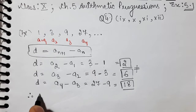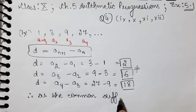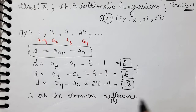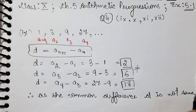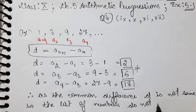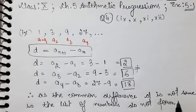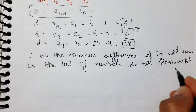Therefore, the common difference D is not the same. The list of given numbers does not form an AP. Since it doesn't form an AP, we will not write the common difference and will not find additional terms. This part is over.